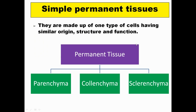Simple permanent tissue can be of three types. They have the same origin, structure, and function but are categorized into three main parts: parenchyma, collenchyma, and sclerenchyma.